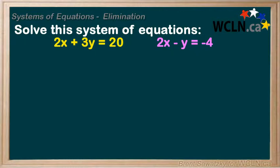Solve this system of equations: 2x plus 3y equals 20, and 2x minus y equals negative 4. Again, we have two equations and two unknowns. Now, could we solve this by graphing? Yes — if we graphed them both on the same grid, wherever they intersect would be our solution. If we had an answer, could we confirm it by plugging into each equation? Yeah, that works perfectly too.